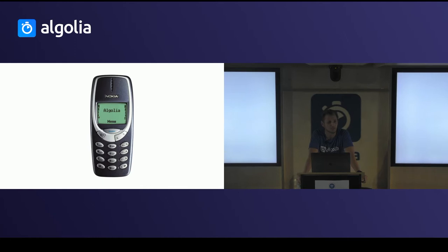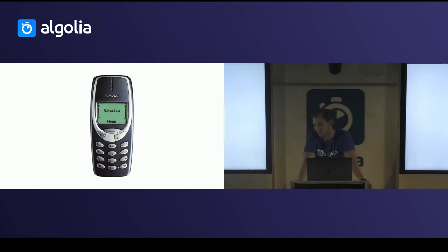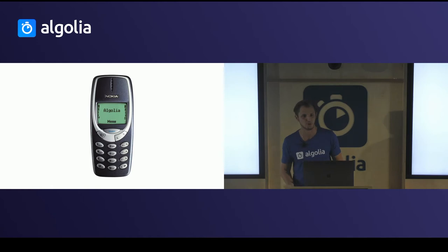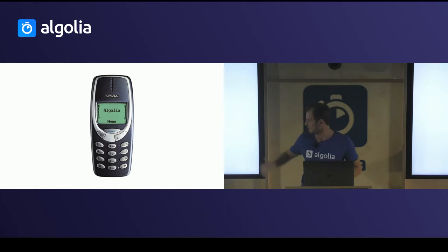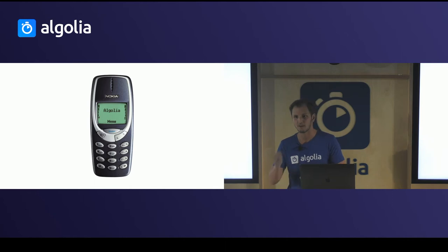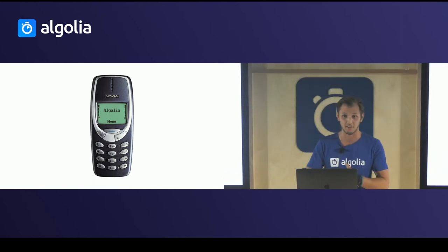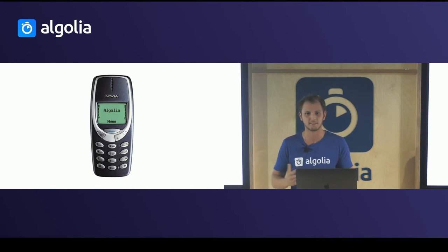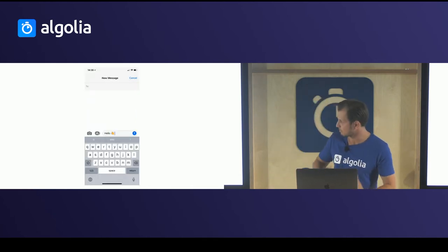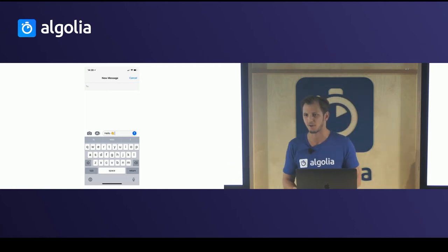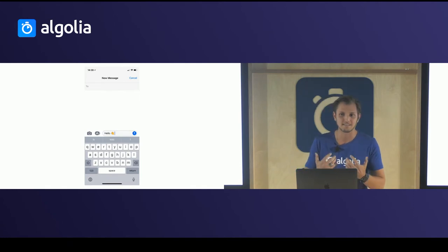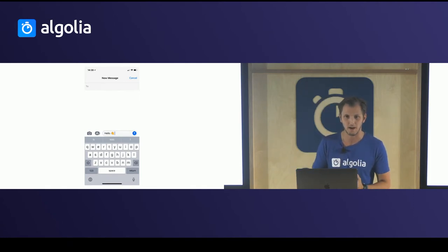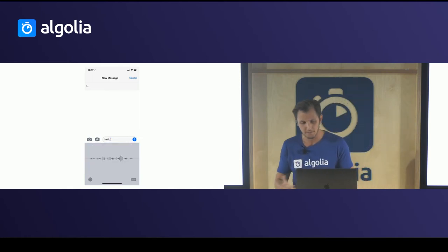Historically, when you think about how we do search and communicate on phones, it's been using a keyboard. In the beginning we had this keyboard where you had to type one, two, three, four times to get to a character — it took a lot of time, it's definitely not natural. We got used to it because of technical limitations back in the day, then we moved to a more normal keyboard, but it's still not natural — I still need to type whenever I want to communicate something.